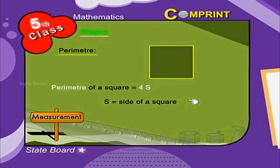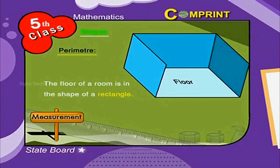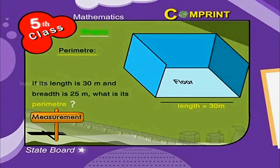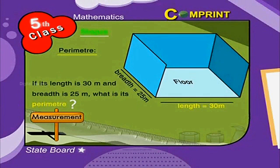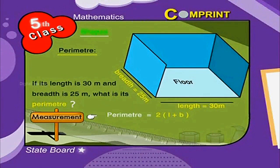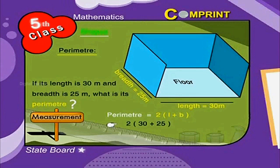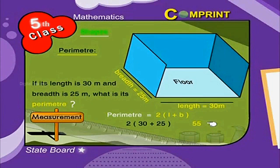Let us see an example. The floor of a room is in the shape of a rectangle. If its length is 30 meters and breadth is 25 meters, what is its perimeter? Solution: length of the floor is equal to 30 meters, breadth is equal to 25 meters. Applying the formula: 2 into (30 plus 25). 30 plus 25 becomes 55. 2 into 55 becomes 110 meters.